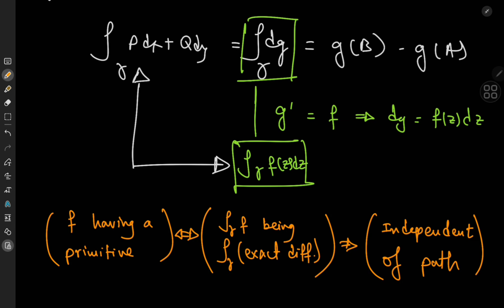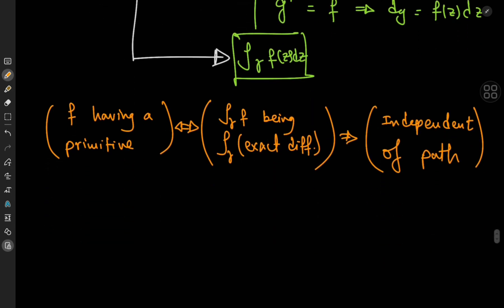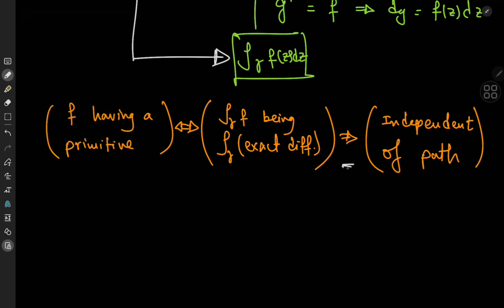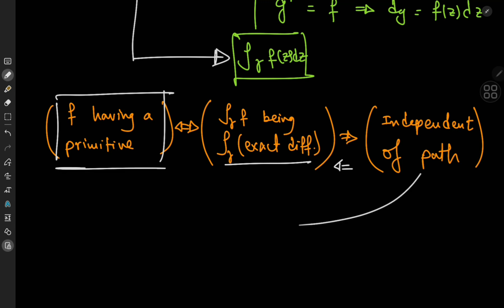So if you have the integral over gamma of an exact differential, that would obviously be independent of path. The question is whether the converse is true. If we can prove that independence of path means the integral can be expressed as the integral of an exact differential form, that would be the same as saying the function has a primitive, and our problem would be solved.